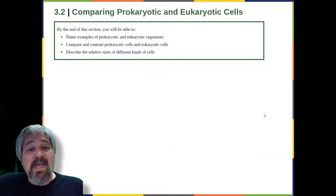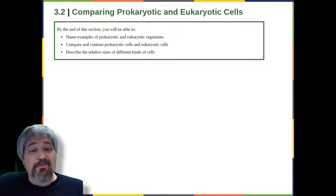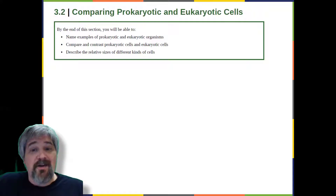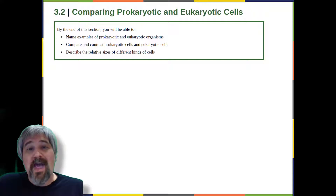By the end of this section, you will be able to name examples of prokaryotic and eukaryotic organisms, compare and contrast prokaryotic cells and eukaryotic cells, and describe the relative sizes of different kinds of cells.